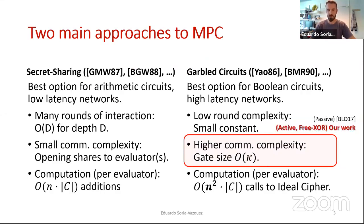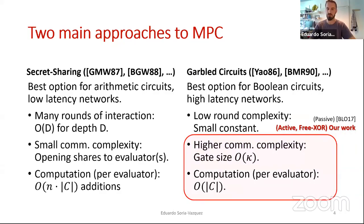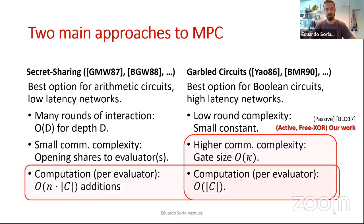What we look into in this paper is how to get rid of this factor of n. This has been done before but only for passively secure adversaries — that was work by some of the authors in this paper, mostly by Lindell, and that previous work didn't have the free XOR optimization. By reducing the size of these gates we also reduce the computational overhead, making things much more similar to the secret sharing world.